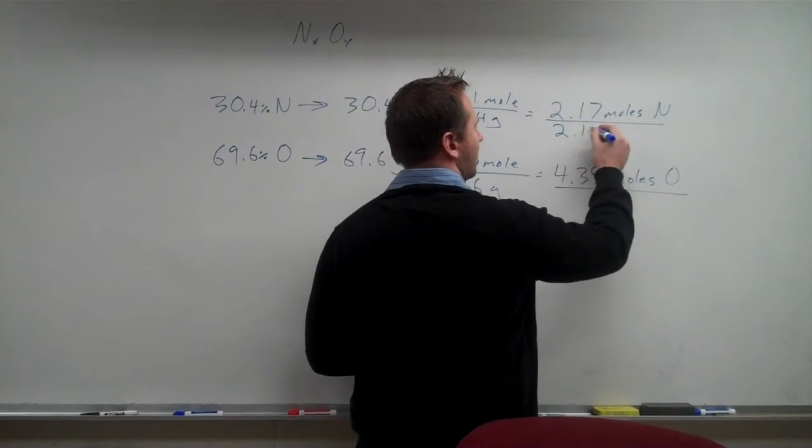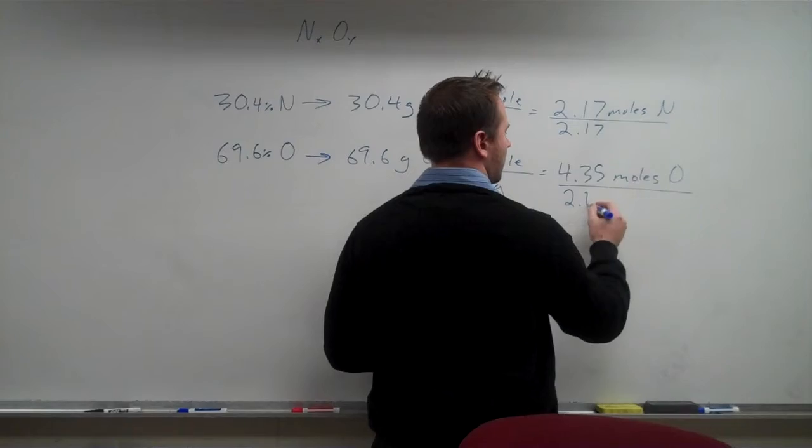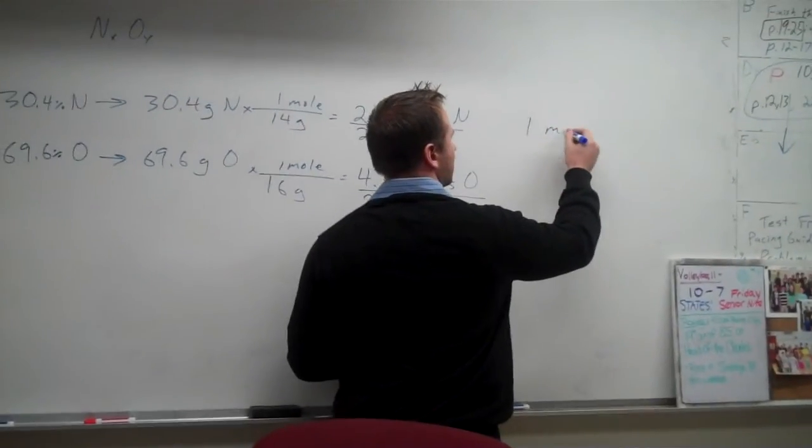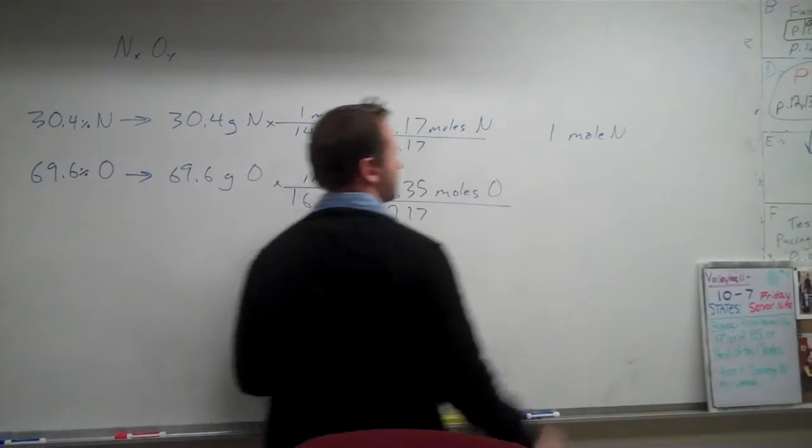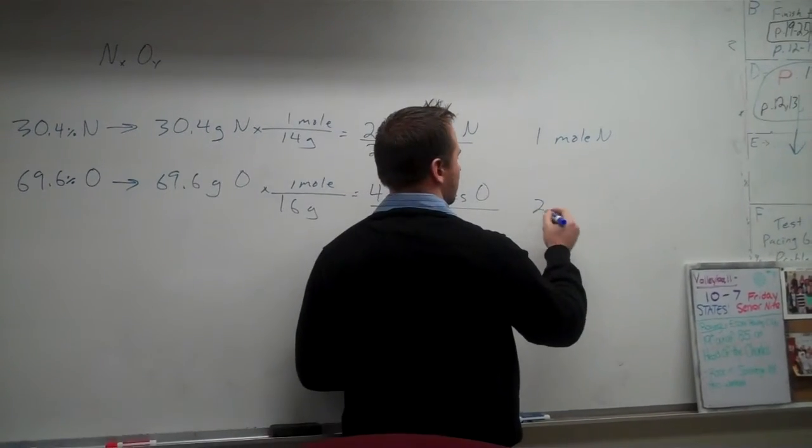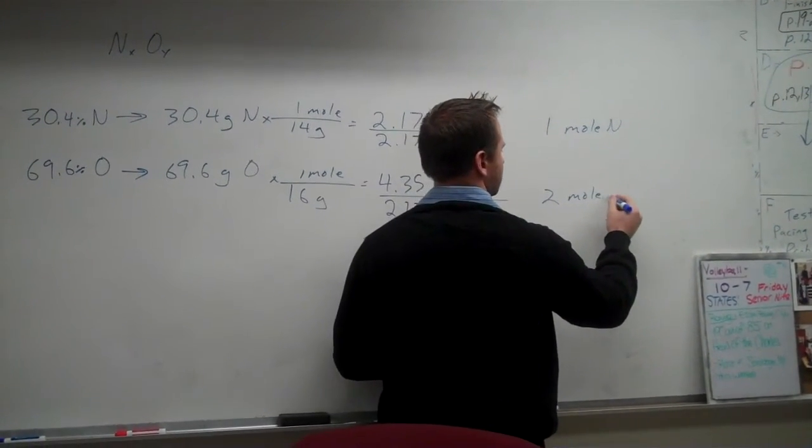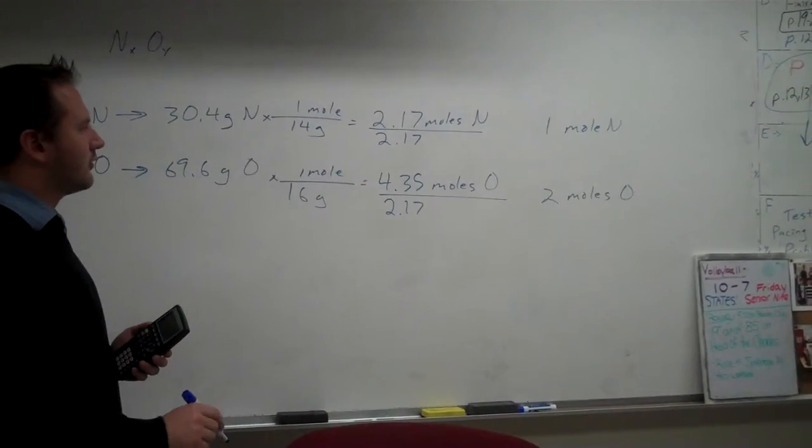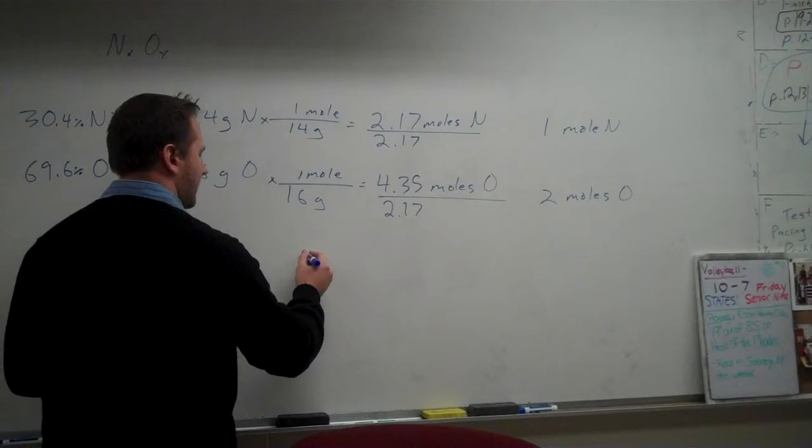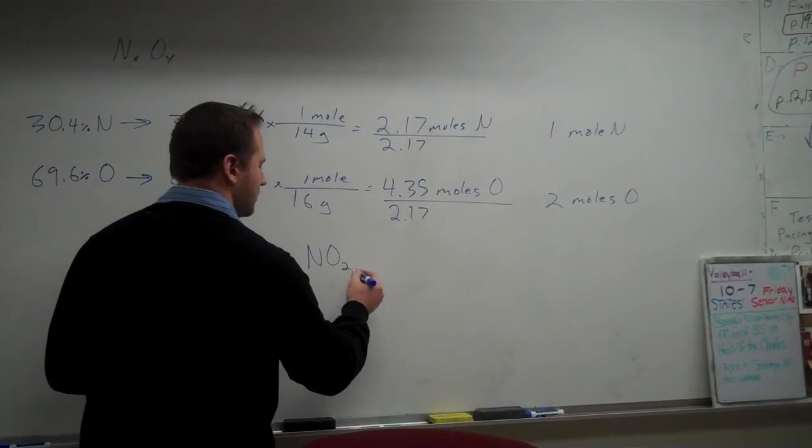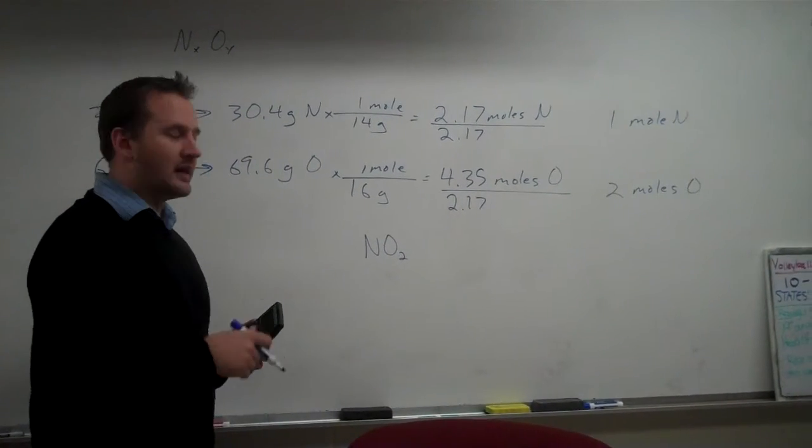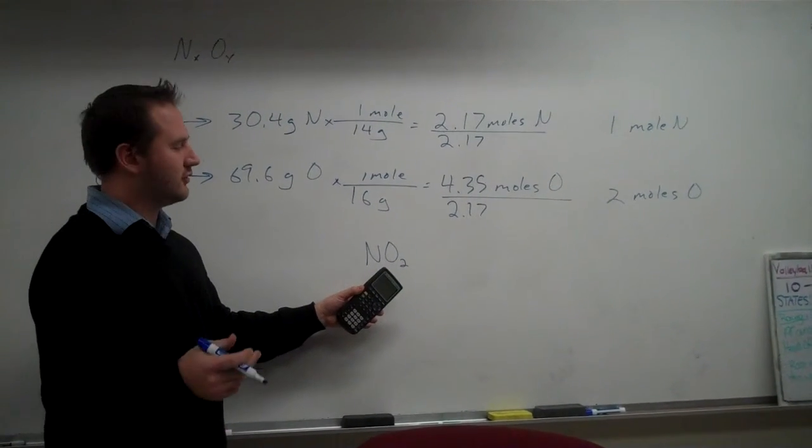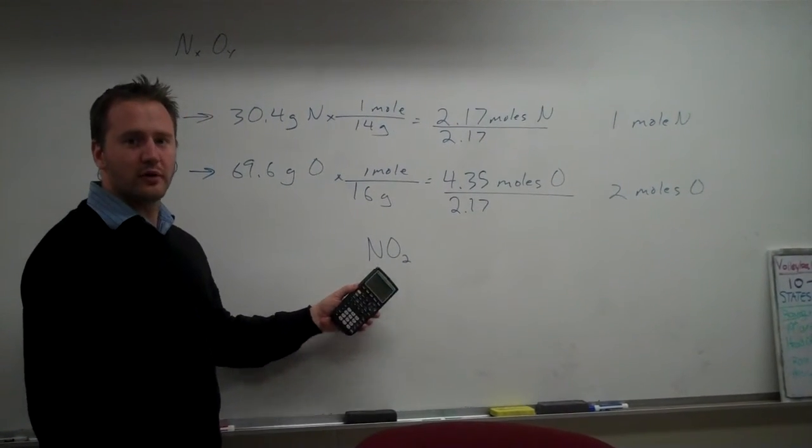This works out to be, for every one mole of nitrogen, we have two moles of oxygen. So we can say that our empirical formula is going to be NO2. Next video, we're going to take the empirical formula and convert it to its molecular formula.